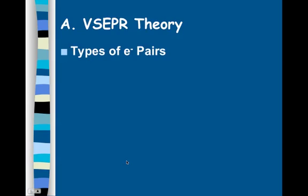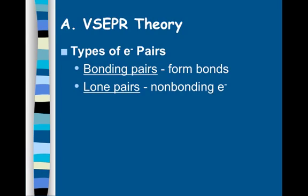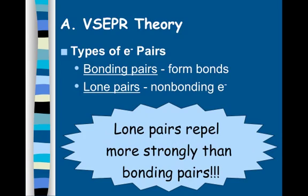Let's talk about the types of electron pairs. The first type is a bonding pair — the pairs of electrons that form bonds. These are denoted by lines in our Lewis structures. The second type are lone pairs, which are non-bonding electrons denoted by two dots right beside each other. A rule of thumb is that lone pairs repel more strongly than bonding pairs. Bonding pairs are closer together because both atoms are pulling on them, decreasing the radius between the atoms. Lone pairs are associated with a single atom and take up more space, so they repel more strongly.